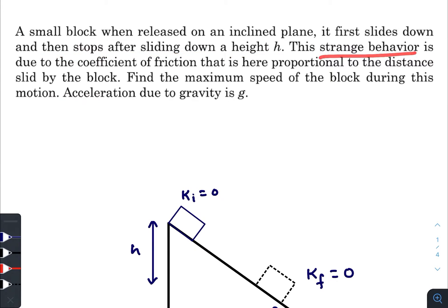This strange behavior is due to the coefficient of friction that is here proportional to the distance slid by the block. So here the coefficient of friction is directly proportional to the distance traveled by the block on the inclined plane. Find the maximum speed of the block during this motion. Acceleration due to gravity is g.